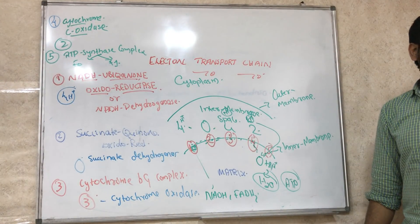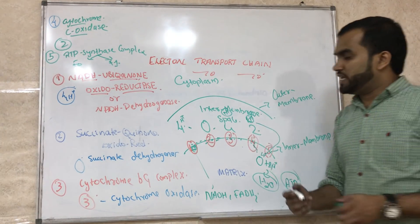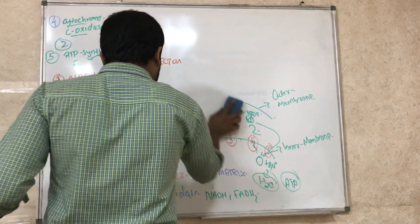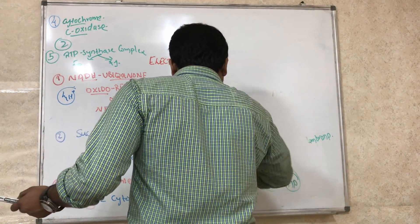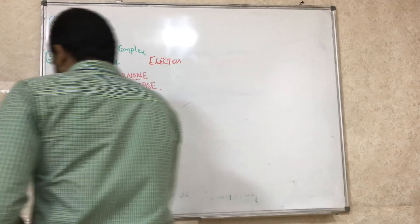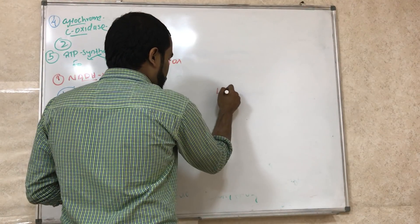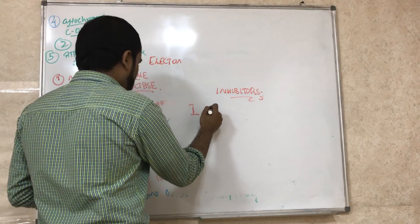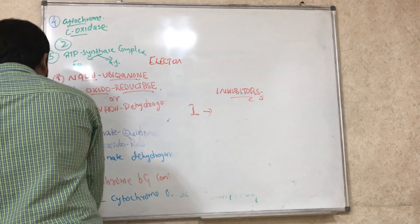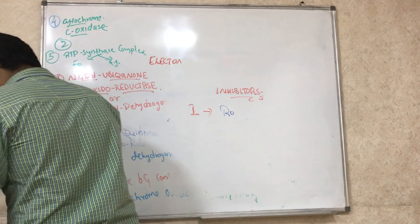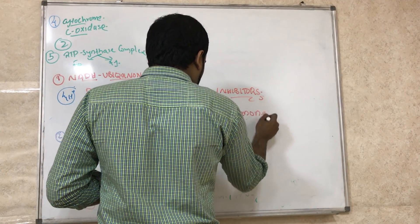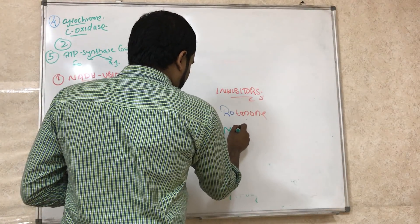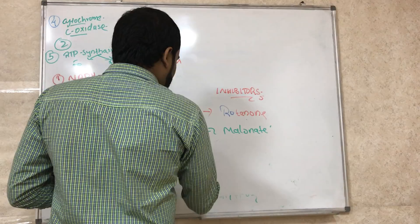In MCQs, questions are often asked about the inhibitors of these complexes. Complex I is inhibited by a compound called rotenone (R-O-T-E-N-O-N-E), which is also an insecticide. Complex II is inhibited by a compound called malonate.